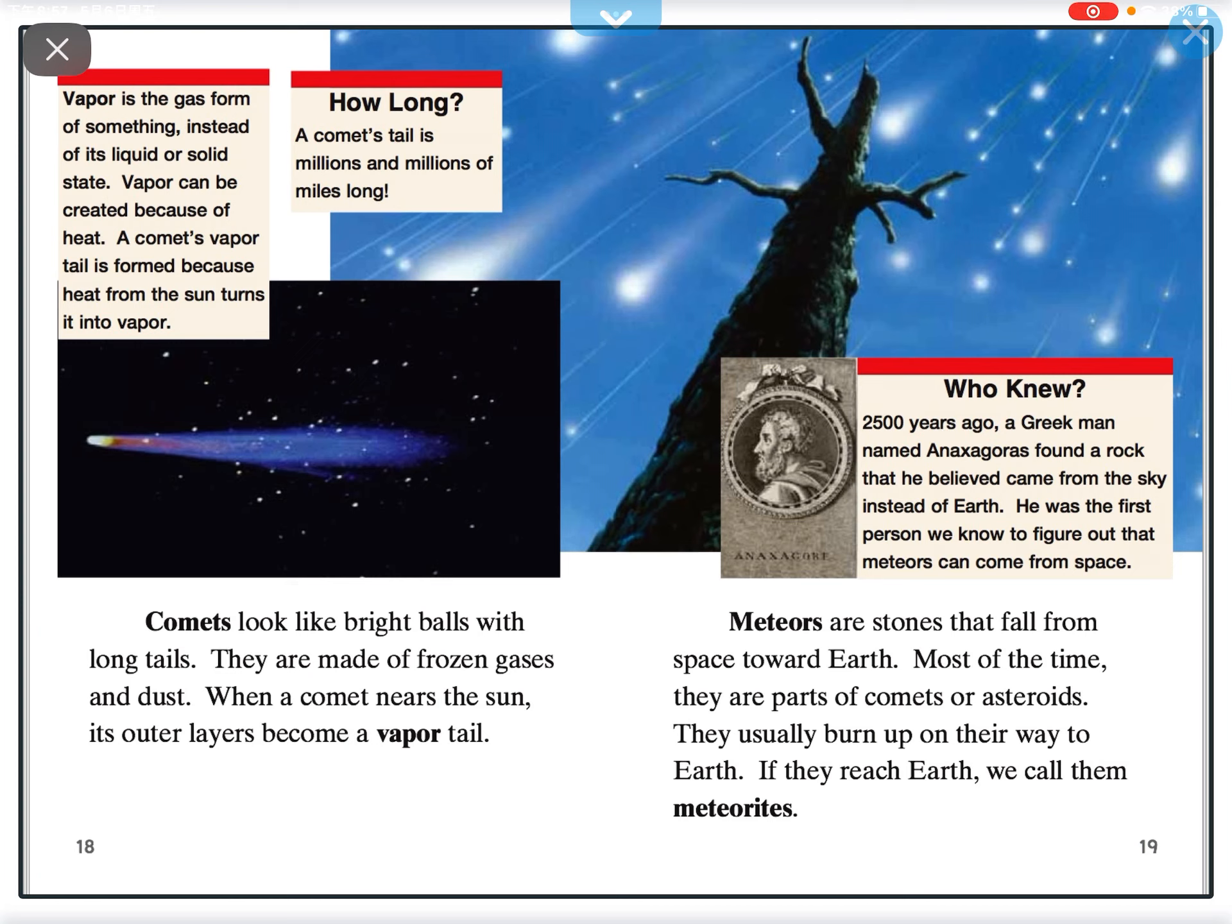Comets look like bright balls with long tails. They are made of frozen gas and dust. When a comet nears the sun, the outer layer becomes a vapor tail. Meteors are stones that fall from space to Earth. Most of the time they are parts of comets or asteroids. They usually burn up on their way to Earth. If they reach Earth, we call them meteorites.